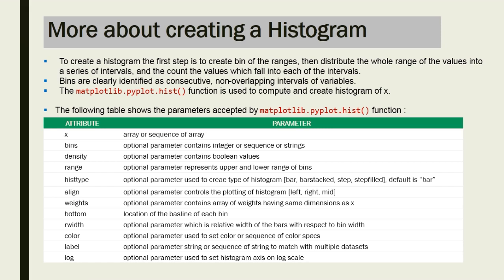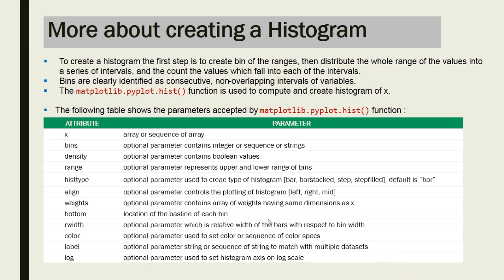The align attribute lets you align the graph to the left, right, or mid. The width parameter contains an array of weights having the same dimension as x. rwidth is the relative width of the bar with respect to the bin width. color is used to set the color or sequence of color spaces. label is a string or sequence of strings to match with multiple datasets. log sets the histogram axis to a log scale. For general use, x and bins are the most essentially used attributes.